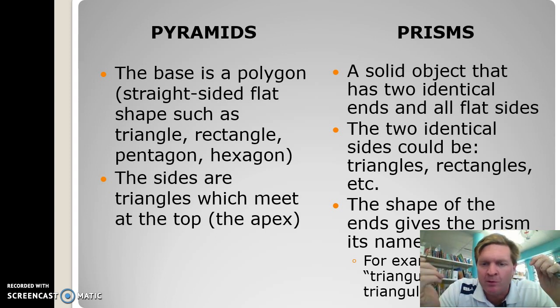The name of the prism comes from the shape of the ends, which gives the prism its name. You probably know some of these. For example, a triangular prism has triangular ends, and that's why it's called what it's called.